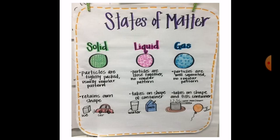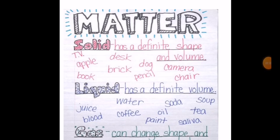What does solid mean? Solid is like ice or a car. Solid has a fixed shape — it has a defined shape and volume. Examples of solids include a TV, an apple, a book, a desk, a brick, a pencil, a camera, and a chair. These are all solids.